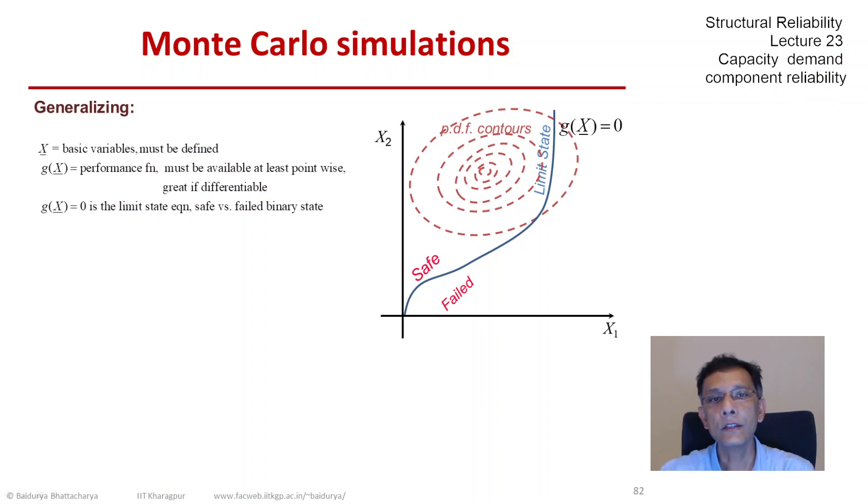But this can easily be generalized, especially in the context of Monte Carlo simulations. So we have a performance function g of the x vector and g of x equals 0 is our limit state equation.